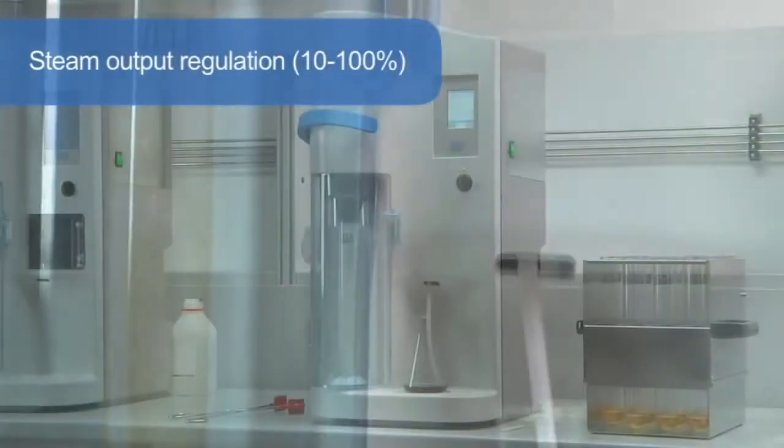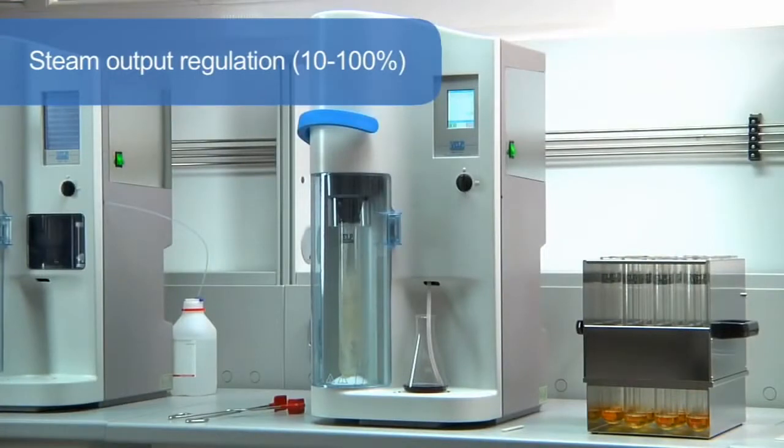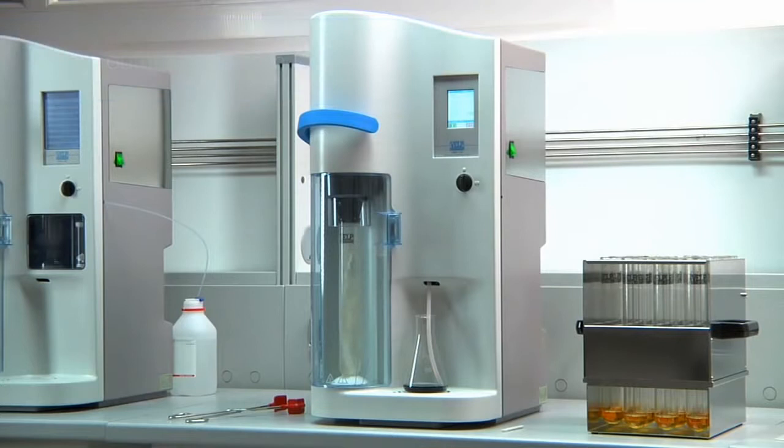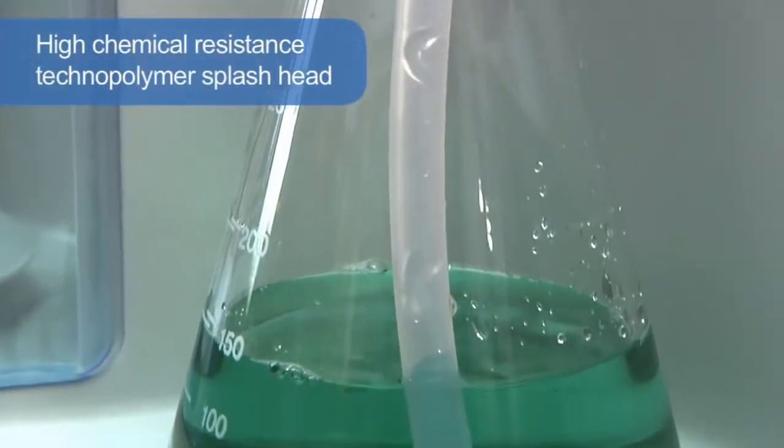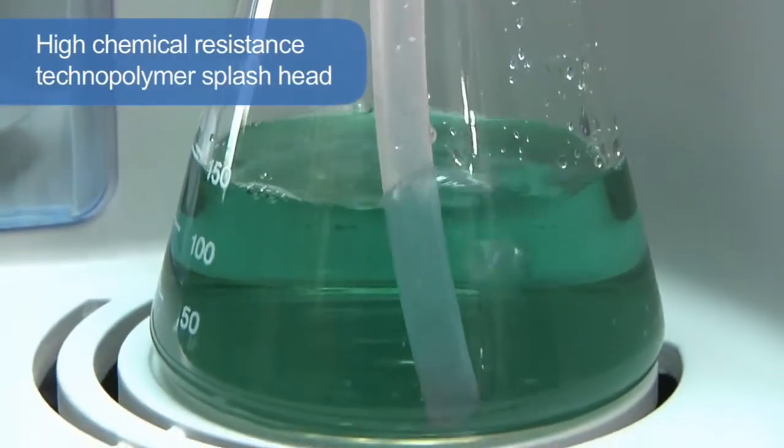Thanks to the steam output regulation, 10 to 100%, the UDK 149 is recommended for many applications, including alcohol, volatile acids, phenols, sulfites and TVBN determination. The high-chemical resistance technopolymer splash head is the most resistant solution available.